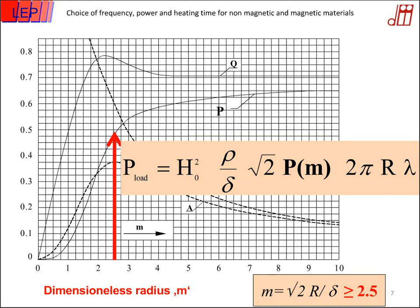Typically, in order to increase M — which depends on the ratio between the radius and the skin depth — we have to increase the frequency. So for small workpieces, when R is smaller, we need a small skin depth, and we need to increase the frequency in order to achieve a value of M of at least 2.5.